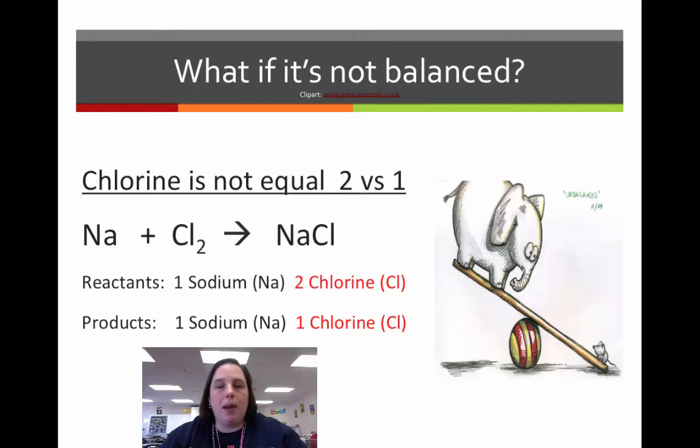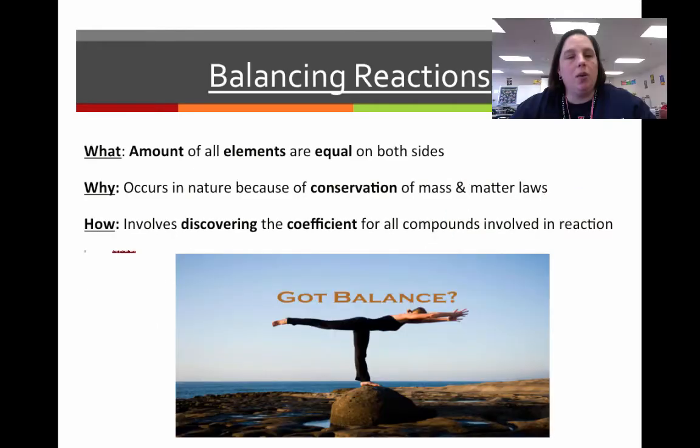So, what if it's not balanced? So, this is where we're picking up from before, just like my elephant and my mouse here. So, if you look at this equation, we have got two chlorine as reactants and we only have one as a product. Well, we know that can't happen in nature, so what is it that we can do? We said they have to be equal, but how is what I'd like you to star here and look at.